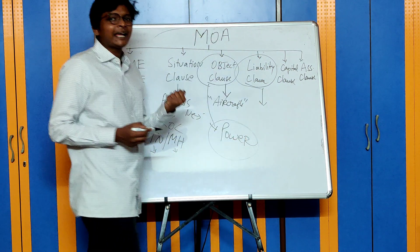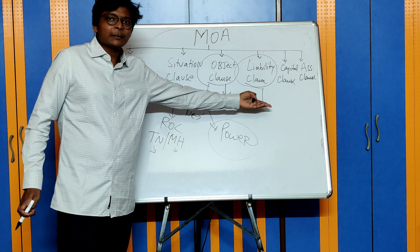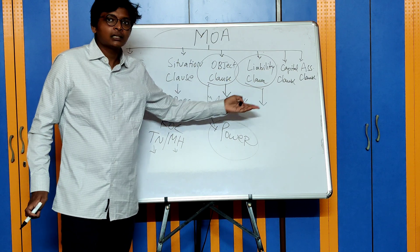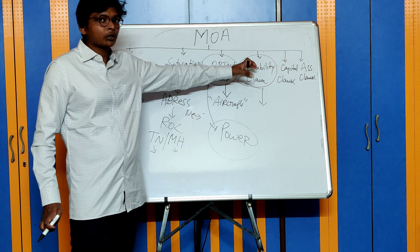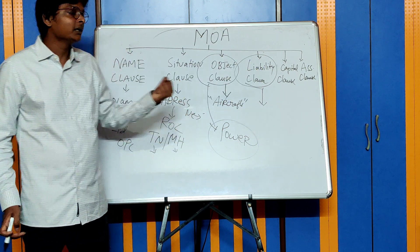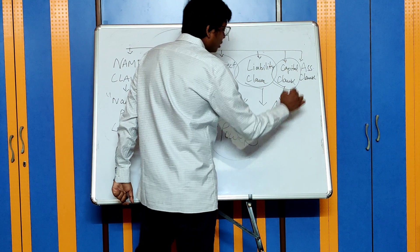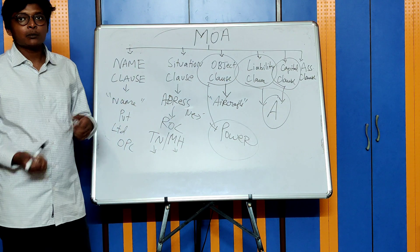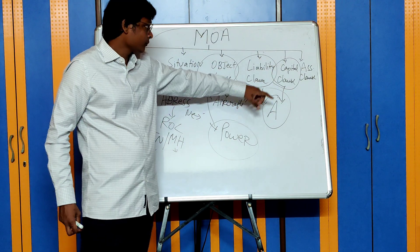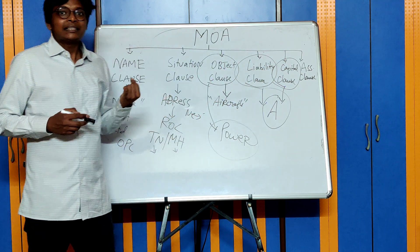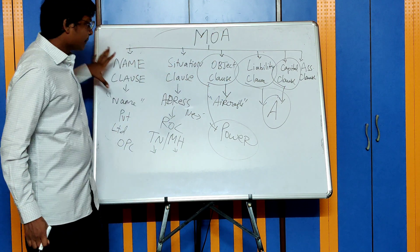Next is the Liability Clause, which talks about the liability of the members. As discussed, a company can be classified as limited by shares, limited by guarantee, or unlimited. In the case of an unlimited company, the Liability Clause will say the liability of members is unlimited. Then there is the Capital Clause, which states the authorised share capital of the company — basically the maximum share capital. Finally, the Association Clause is where the first members of the company sign the MOA.